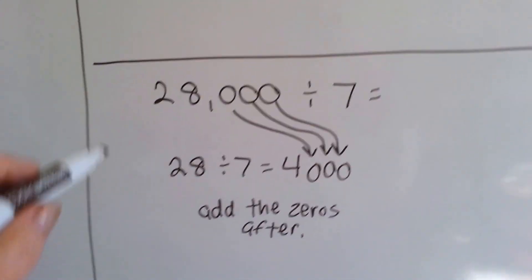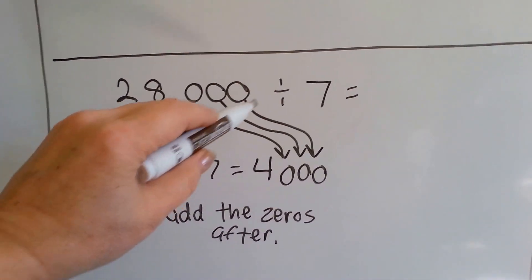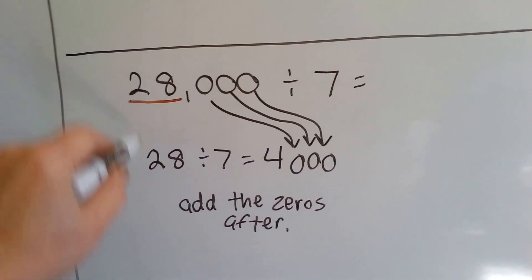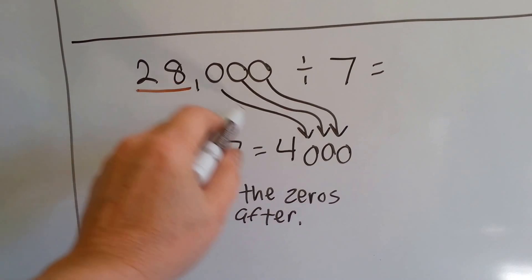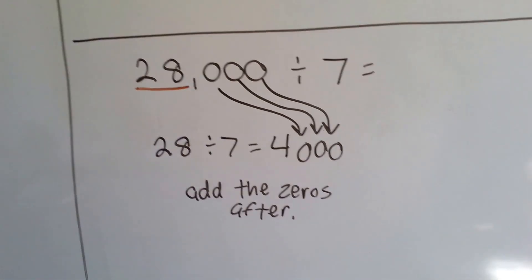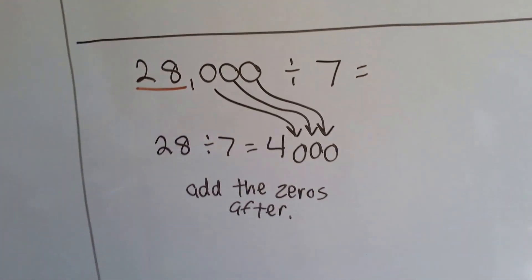How about this one? 28,000 divided by 7 becomes 28 divided by 7, which is 4. And then we add the 3 0's after.